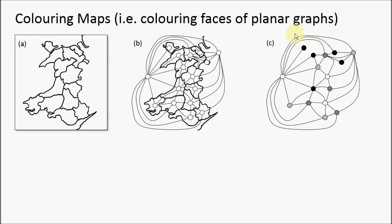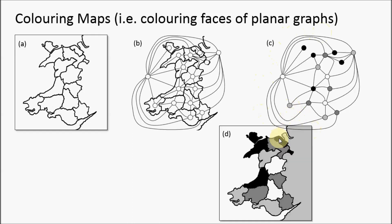Here we've produced a four coloring to this using some algorithm. As a result, we can then map those colors back to the original map. The black vertices correspond to black regions in the map, and so on.